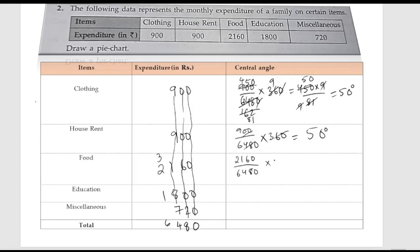Next we have food: 2160 divided by 6480 multiplied by 360. We cancel the zeros, then use the 9 table — 9 sevens are 63, 9 twos are 18. We get 2160 multiplied by 4 divided by 72. Since 36 twos are 72 and 36 into 6 is 2160, after cancellation 60 multiplied by 2 gives us 120 degrees for food.